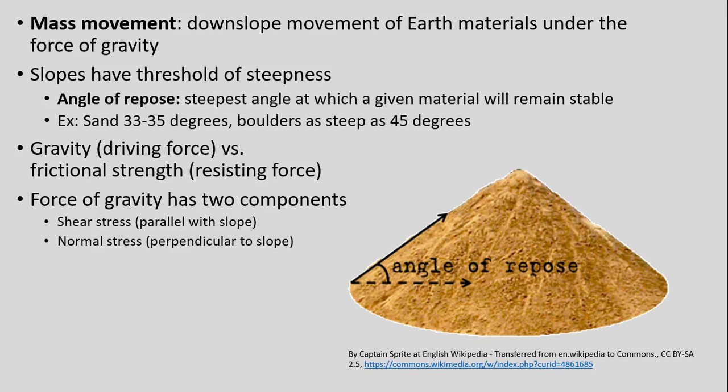Getting back to the topic at hand: mass movements, or downslope movements of earth materials, are all tied to the slope and the angle of that slope. What we want to focus on is what is known as angle of repose — the steepest angle at which a given material will remain stable. For example, sand has an angle of repose of about 33 to 35 degrees from horizontal. Rocks, being more cohesive than sand, can have a steeper angle of repose — possibly up to about 45 degrees, or even more vertical walls in the case of very steep angular rock surfaces.